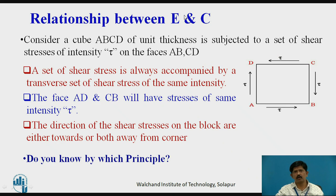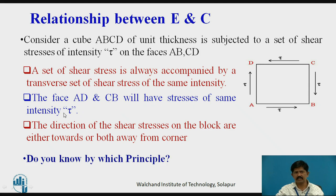Now we derive the relationship between modulus of elasticity E and modulus of rigidity C. We consider a block ABCD of unit width subjected to a set of shear stress of intensity tau on faces AB and CD. A set of shear stress is always accompanied by a transverse set of shear stress of the same intensity; therefore faces AD and CB also have stress of intensity tau. The direction of shear stress on the block is either both towards or both away from the corners. Pause the video and try to answer: by which principle do these shear stresses act?